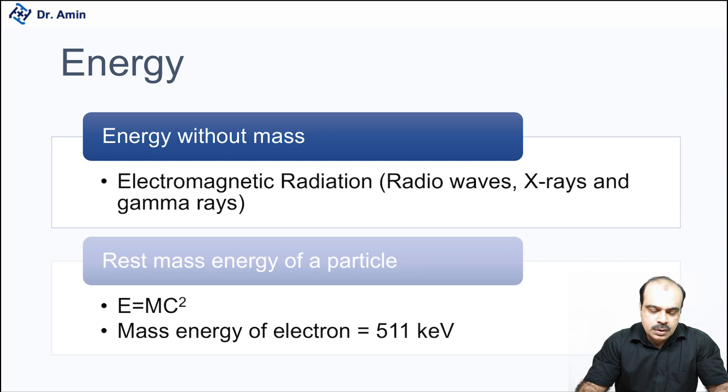Then we have energy in two forms. One is energy without mass, which is electromagnetic radiation. Obviously these are x-rays, which are carrying the energy as a photon. And then we have energy of a rest particle, which can be derived from E = mc². So if we derive the energy of an electron being converted into energy, the mass of the electron being converted into energy, it's going to be approximately 511 kiloelectron volts. And this we will be using in PET or positron emission tomography in further details.